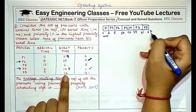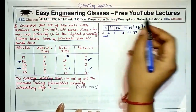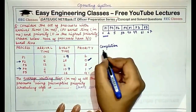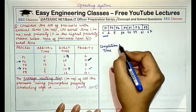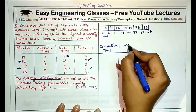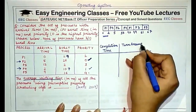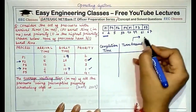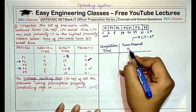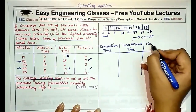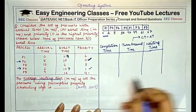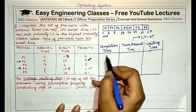P5 executes for 16 units, finishing at time 67. From the Gantt chart we'll find the completion time of all processes, then the turnaround time, and then the waiting time. Turnaround time is completion time minus arrival time, and waiting time is turnaround time minus burst time.